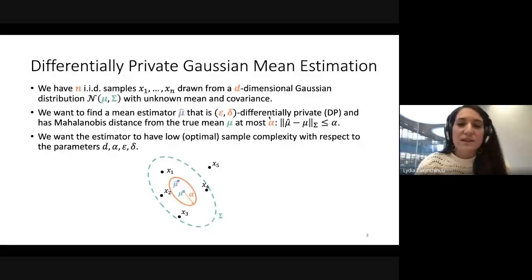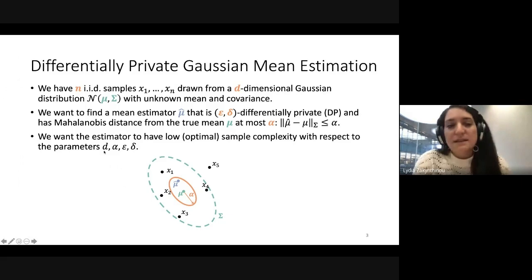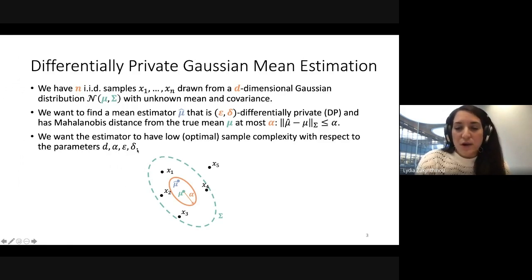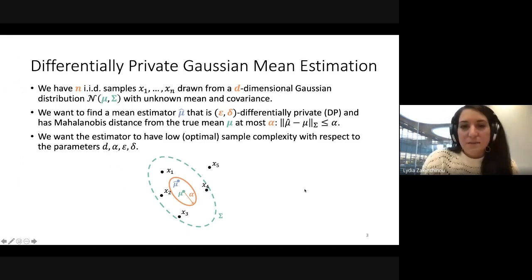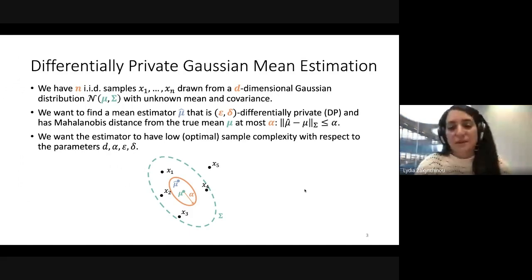What we want is an estimator with low sample complexity. The sample complexity — the number of samples n drawn from the Gaussian distribution — should have small dependence on d (the dimension), alpha (the accuracy or Mahalanobis distance from the true mean), and epsilon and delta (the privacy parameters). In general, this is a fundamental problem even without privacy, but also a building block for more sophisticated problems like optimization or linear regression.